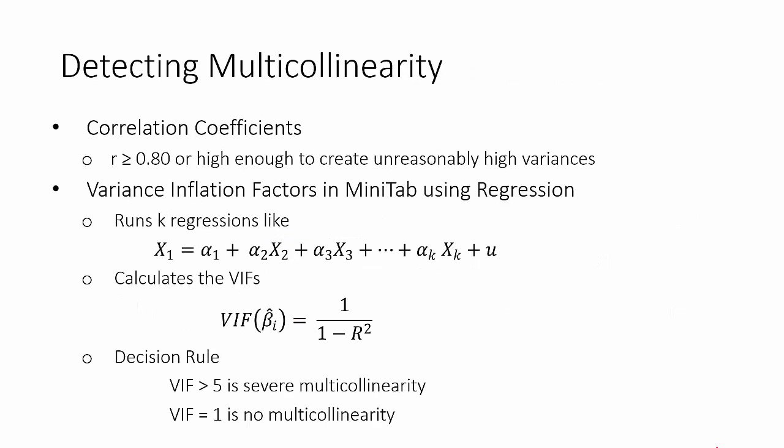So how do we detect multicollinearity? There are two things we're going to do. We're going to run the correlation coefficients, which we use the little r for correlation coefficient. A correlation coefficient allows us to see if there's collinearity between two of our x variables.